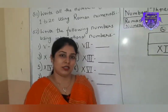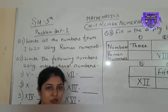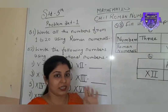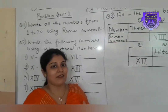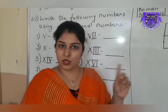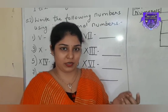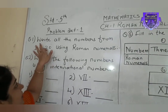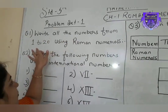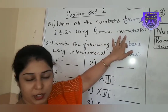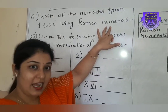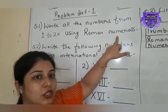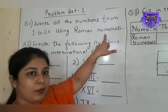Hello students. Today we are going to start with problem set 1 of chapter number 1, Roman Numerals. In the last lecture I have explained you Roman numerals and how to write Roman numerals. Today, problem set 1, question number 1: write all the numbers from 1 to 20 using Roman numerals. In the last lecture I had explained you how to write 1 to 20 in Roman numerals — so this question you have to do by yourself.